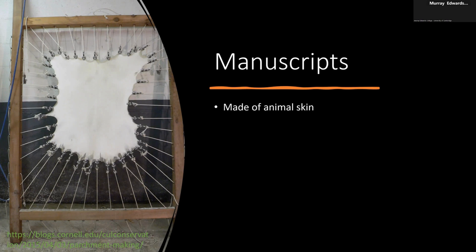If you look at an animal skin, it's a rectangle — the same proportions as maybe a sheet of A4 or a paperback book. So if you have a book with you, have a look at it and imagine it's the shape it is because of the way an animal skin is made. If you get an animal skin and fold it two, three, four, five times, you get the same proportions — the shape of a book. Books are the shape they are because cows and sheep and goats are the shape they are. That's the first fun fact about medieval books.